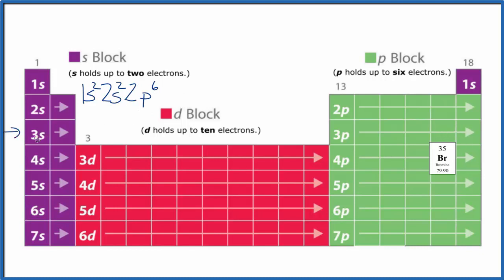Third energy level, we have 3s2, 3p6. We're at the fourth energy level, 4s2, and then we go to the 3d. D can hold up to 10, so we have 3d10.